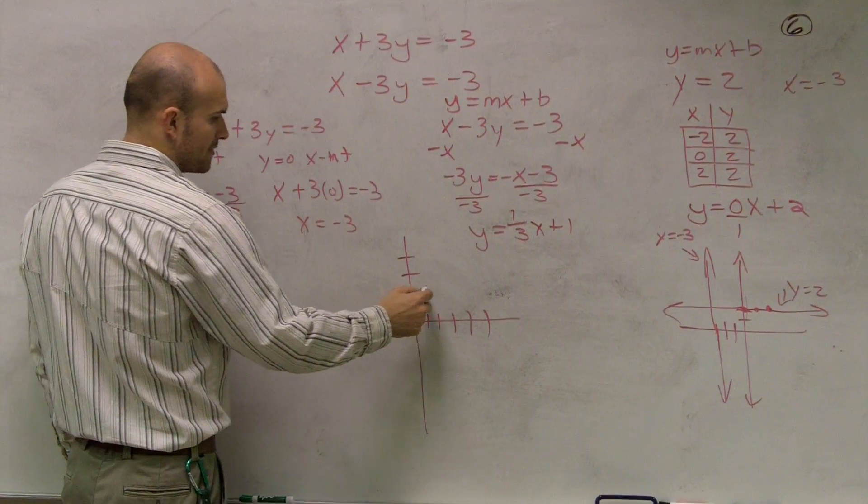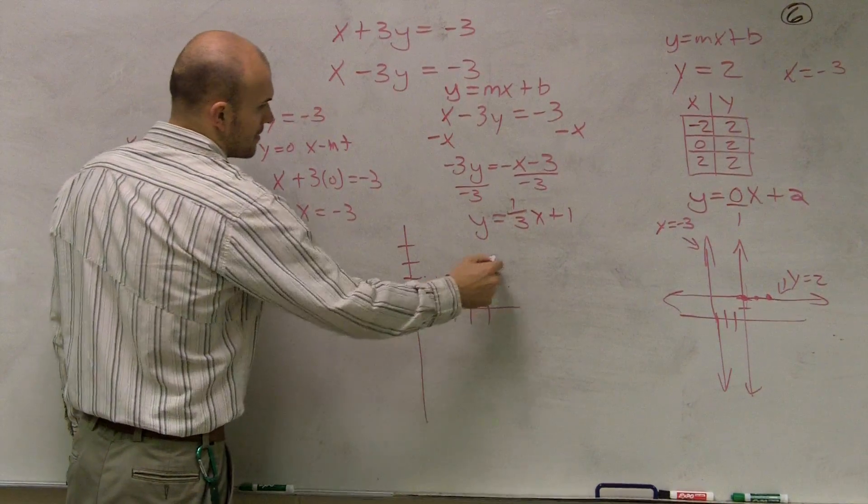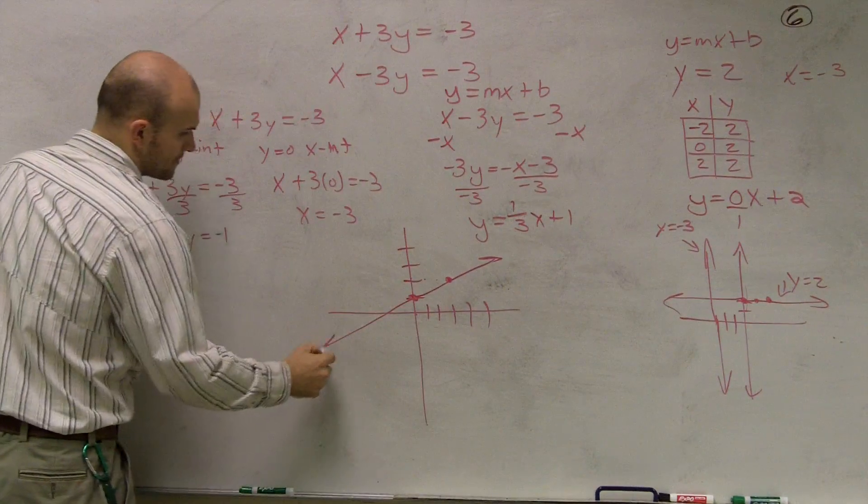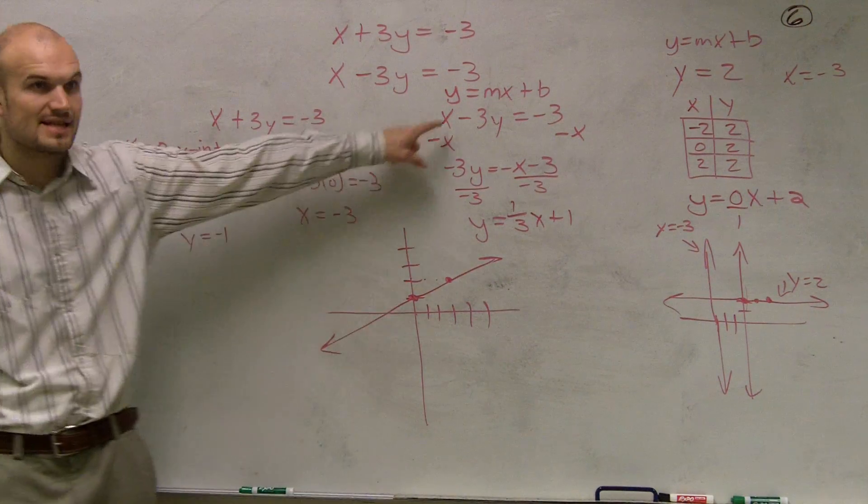Then I need to go up one over three. One, two, three. And graph one. So that's my first line. That's that equation right there.